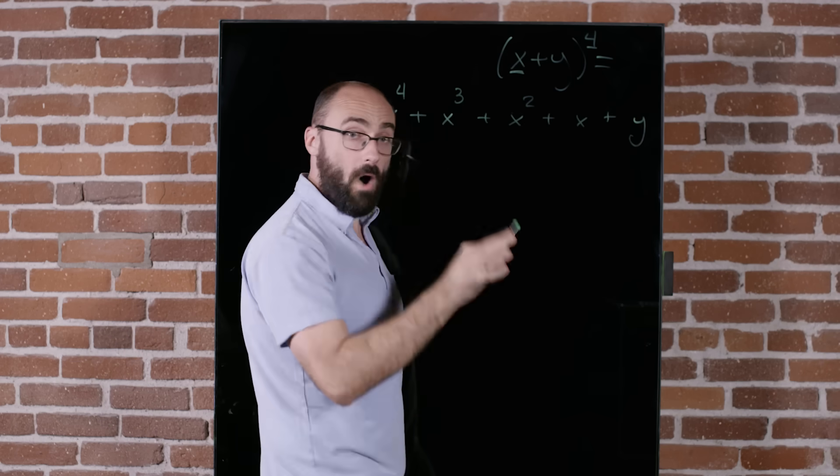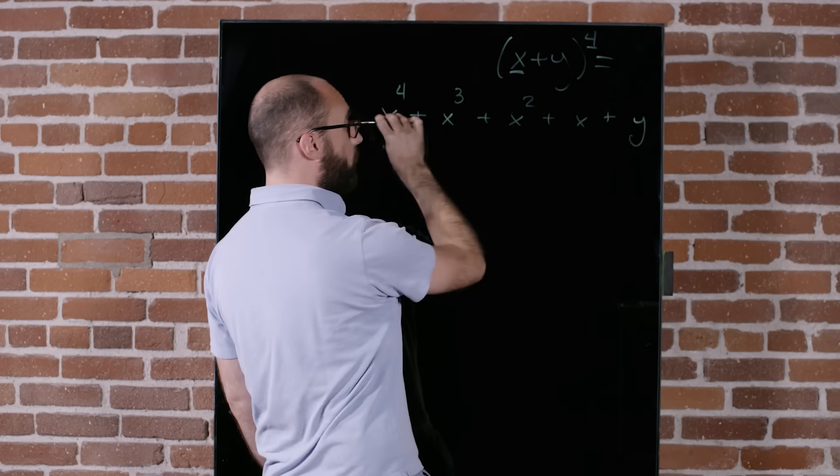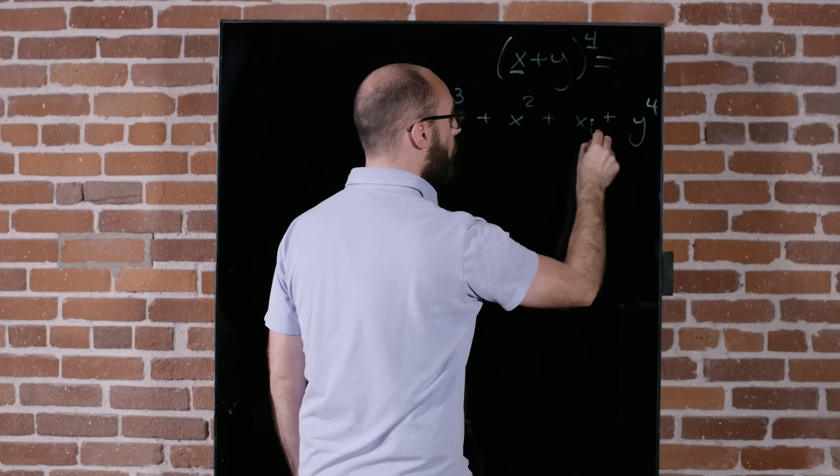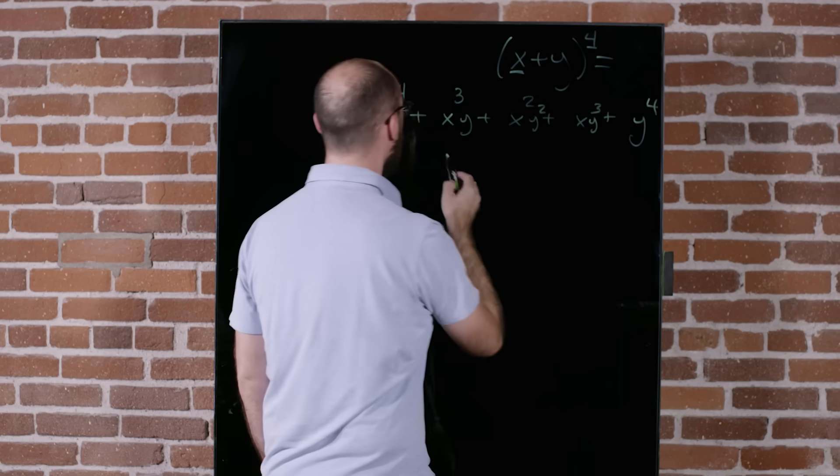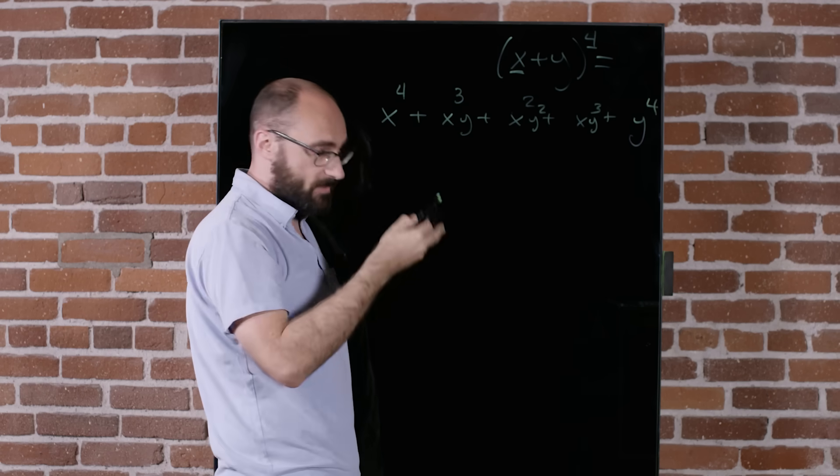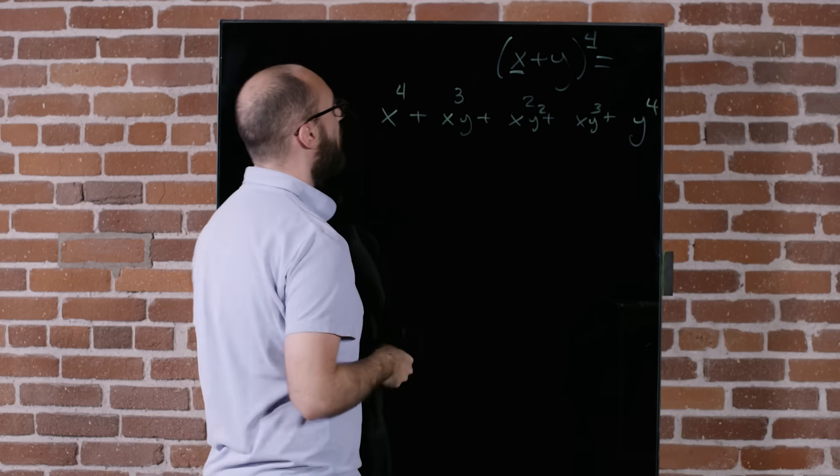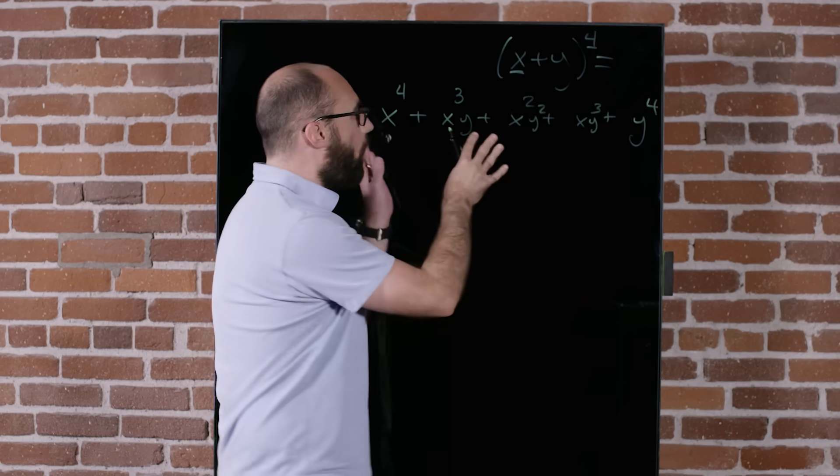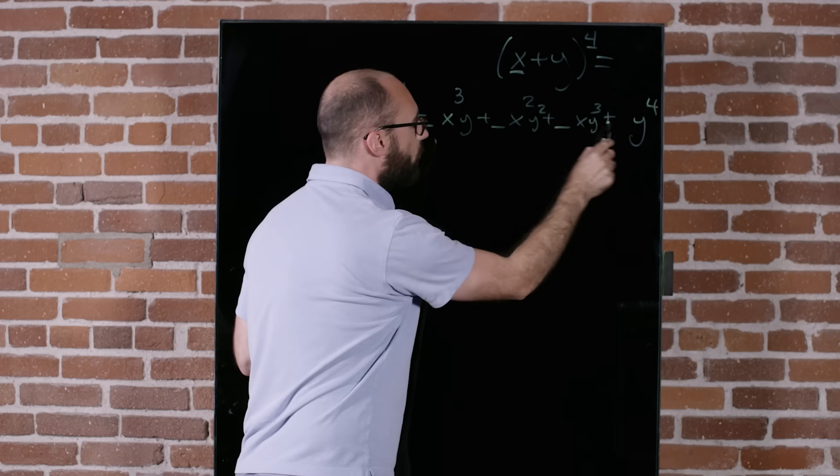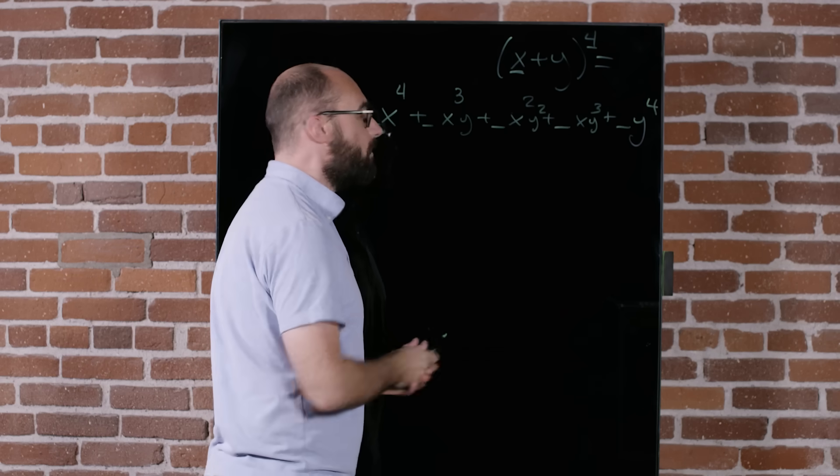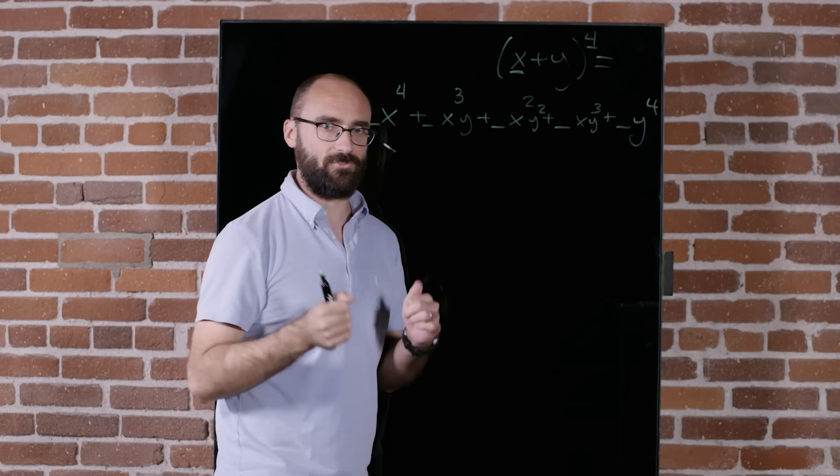Y's exponents go in the reverse order, falling down from 4 to 3 to 2 to 1 to 0, which is equal to 1, so I'm not going to need to write it there. We're almost done, but the problem is we don't know what coefficients should go in front of each of these terms. But what we do know is Pascal's triangle.